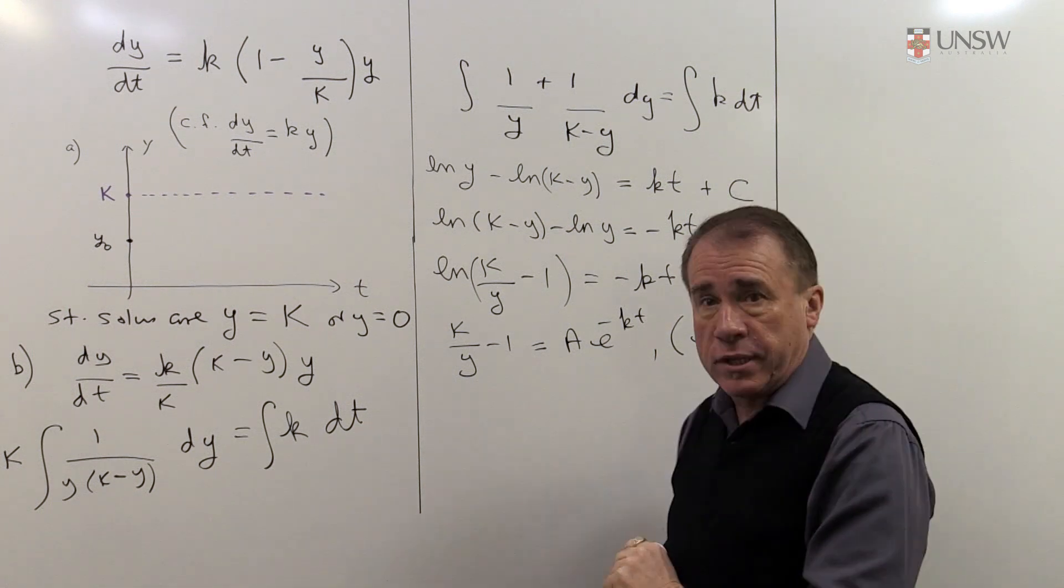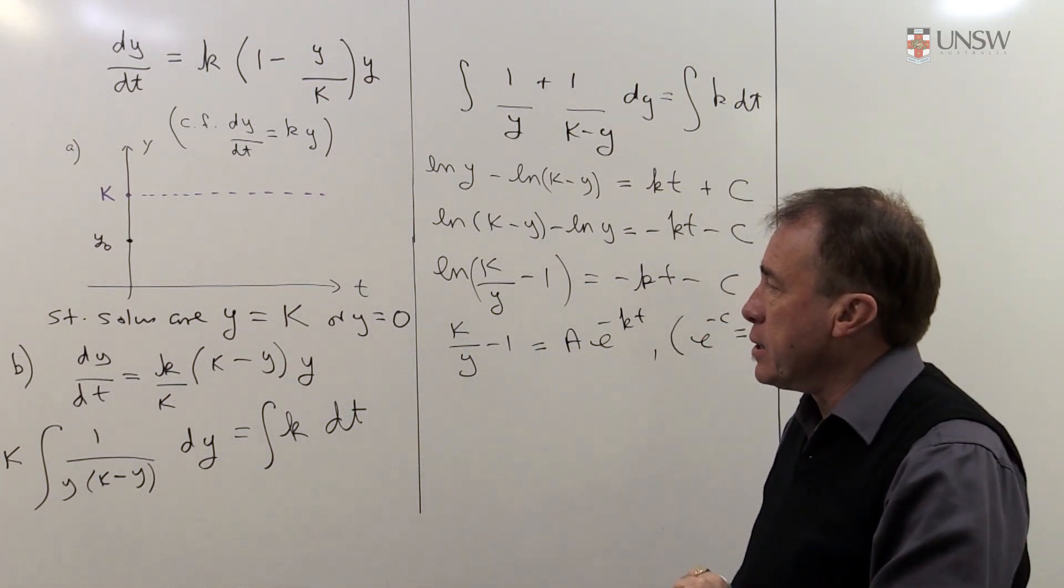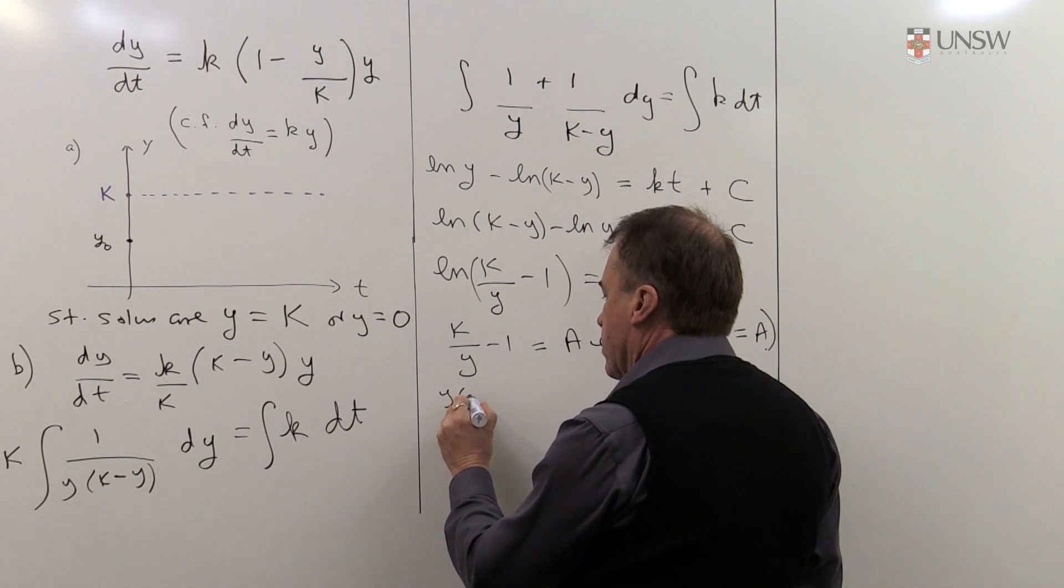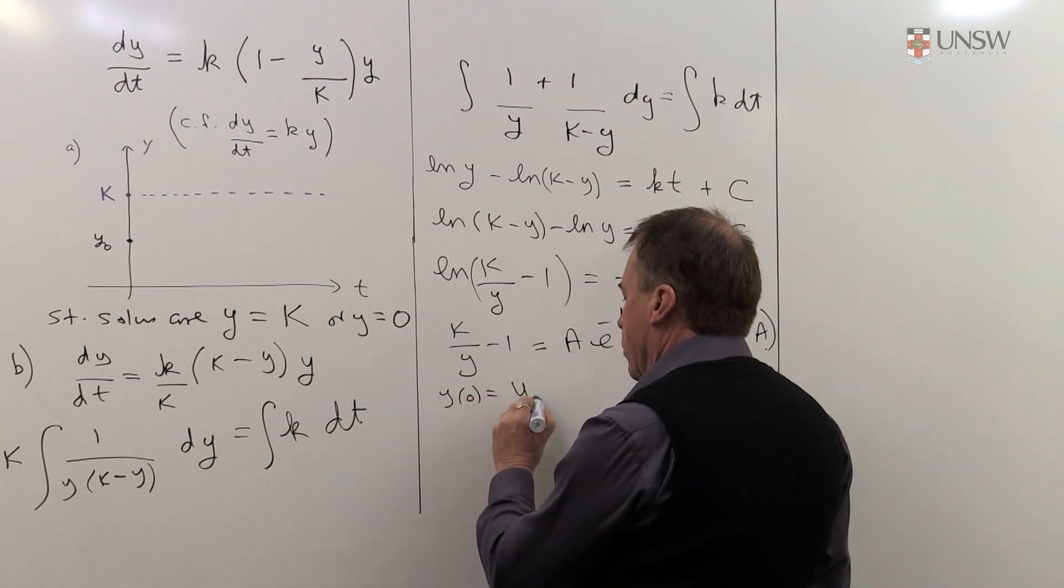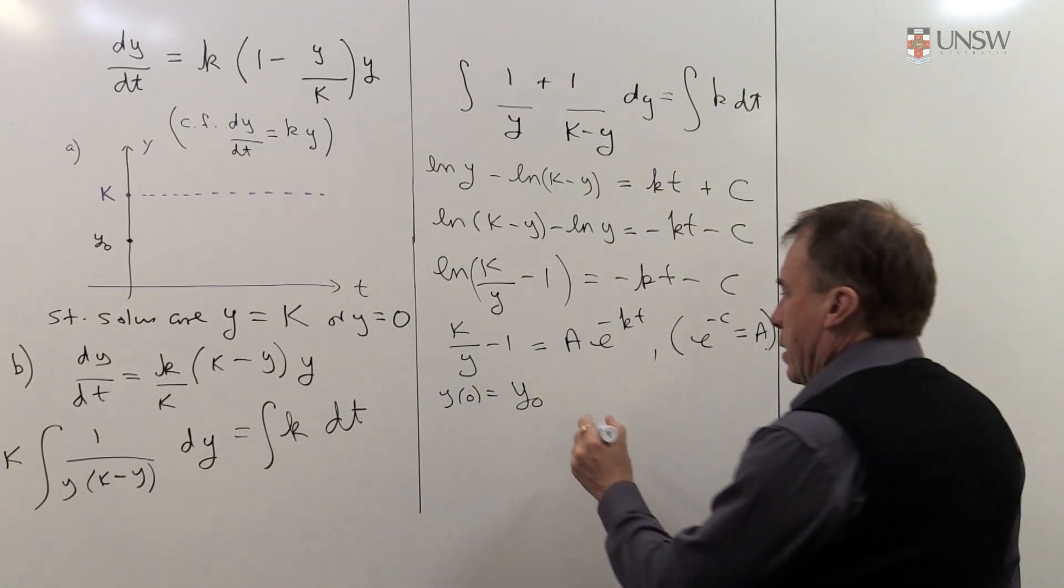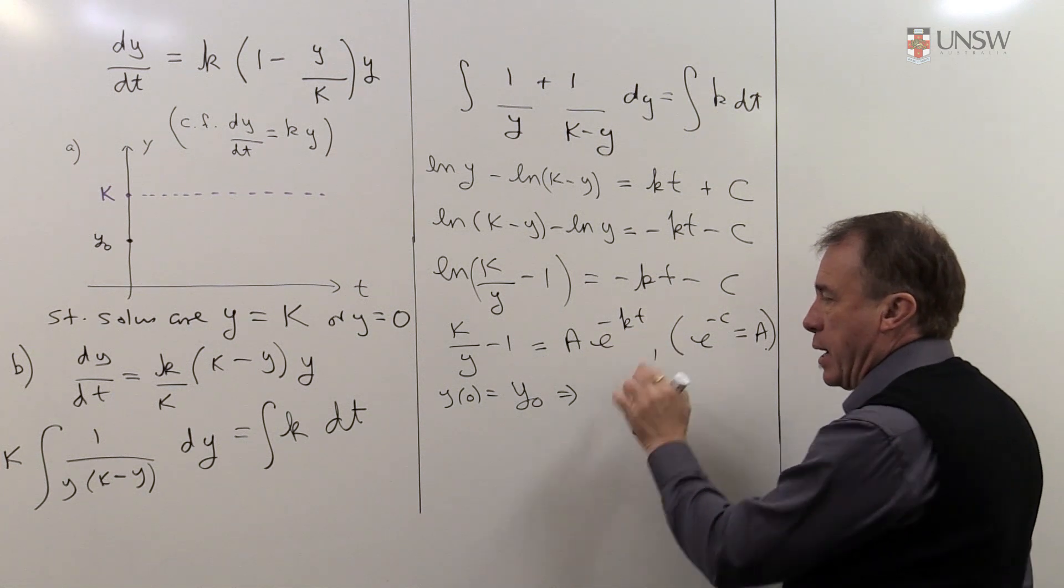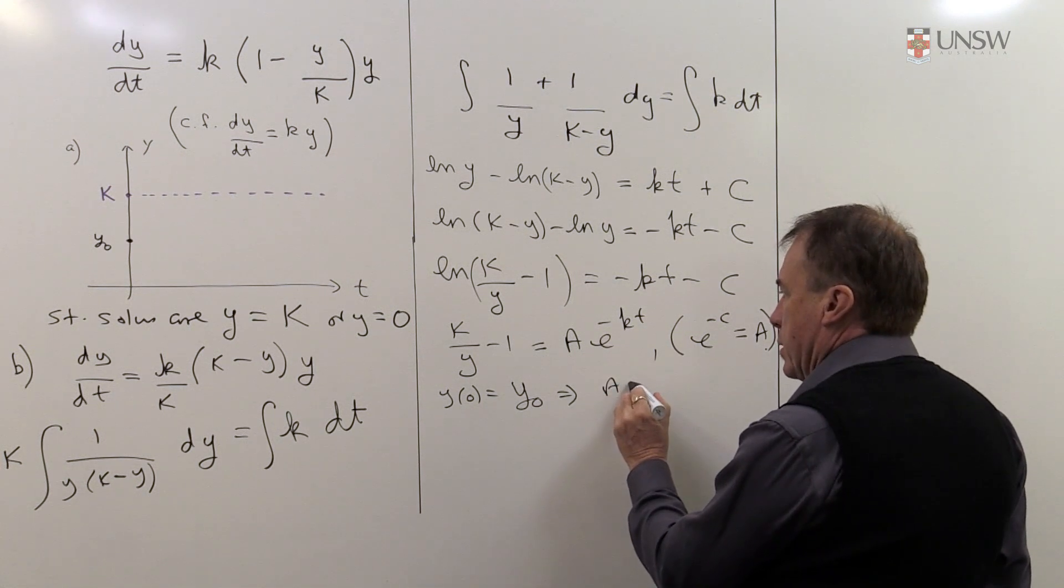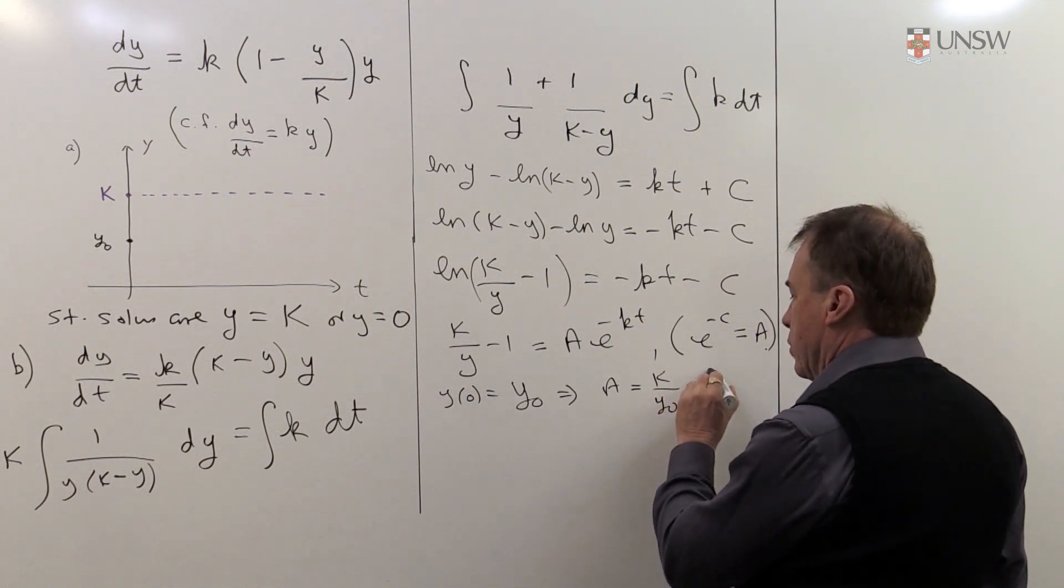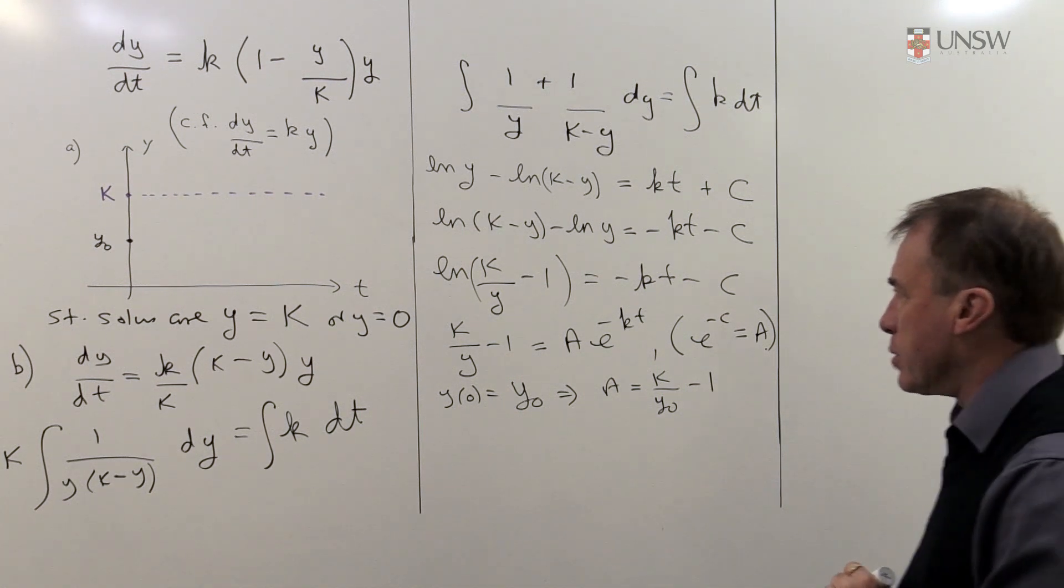OK, so I've now solved the DE up to an arbitrary constant a, and so I now need to use the initial condition, so we know that when t is 0, the initial value was y_0 from here. So I can plug that in, and that's simply going to give me when t is 0, that'll be a, and so I'll get a is equal to k over y_0 minus 1.